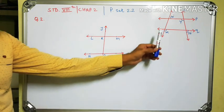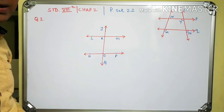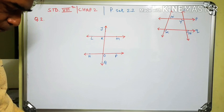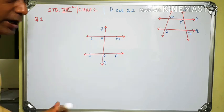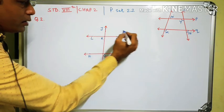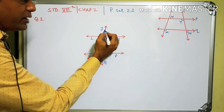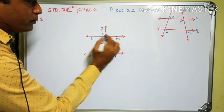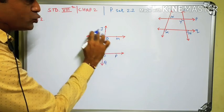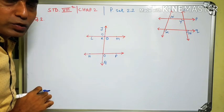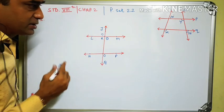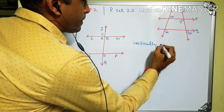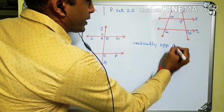Before moving to question 2, let's revise some earlier concepts. Can you tell me what type of angles are angle JKL and angle MKO? These are vertically opposite angles. What are vertically opposite angles? Two angles that have a common vertex point and whose sides form two pairs of opposite rays.